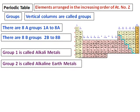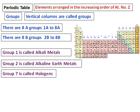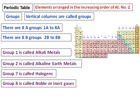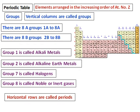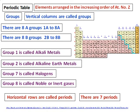Some of the groups have special names. Group 1 we call alkali metals, and group 2 we call alkaline earth metals. Group 7 is called halogens, and group 8 is called noble or inert gases. The horizontal rows we call periods, and there are 7 periods in a periodic table.